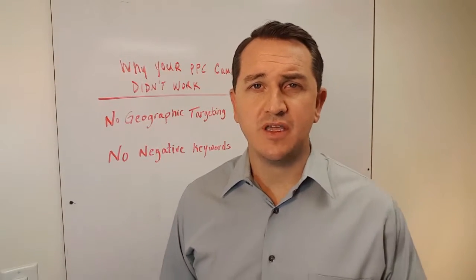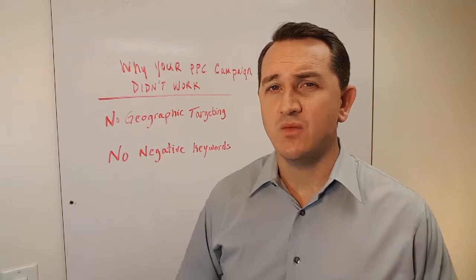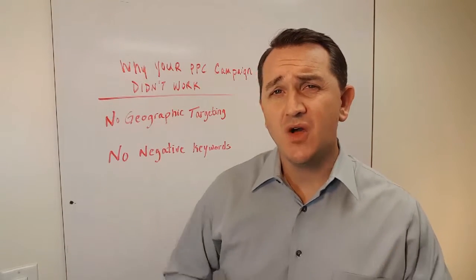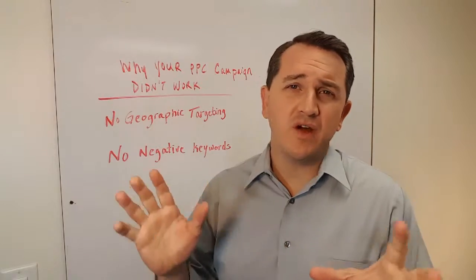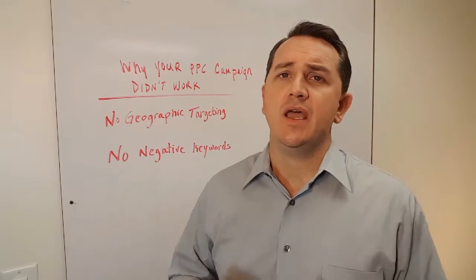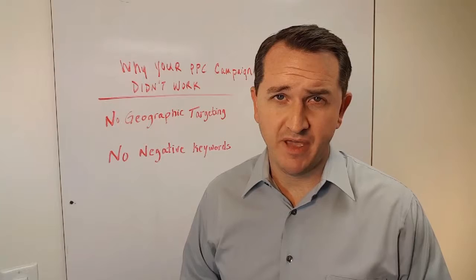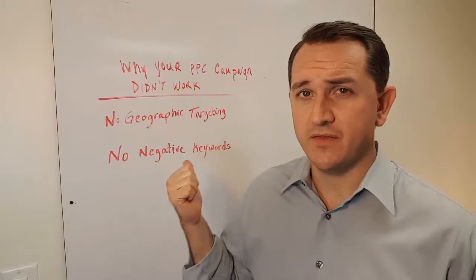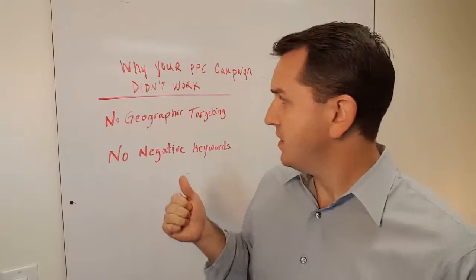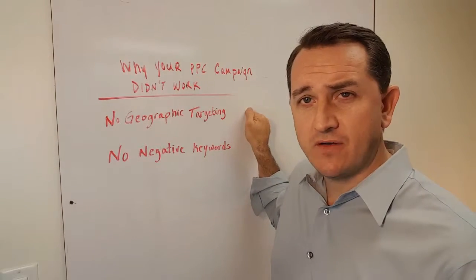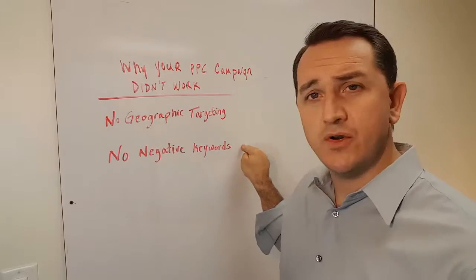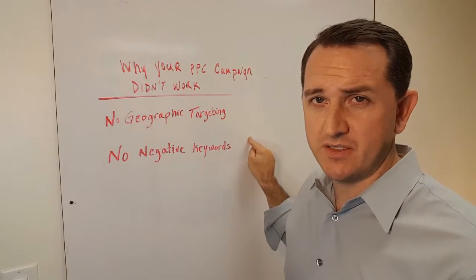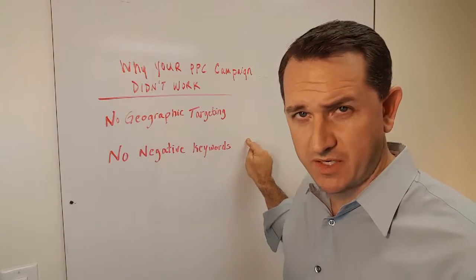I've been managing pay-per-click campaigns for about 15 years, and whenever I hear someone say my campaign was a waste of money, or my campaign didn't work, or we tried that and it was useless — and then I get a chance to look at their campaign — I typically find one or both of these things: either they didn't use geographic targeting, or there were no negative keywords set up in the campaign. These are giant money wasters and budget wasters in a pay-per-click campaign.